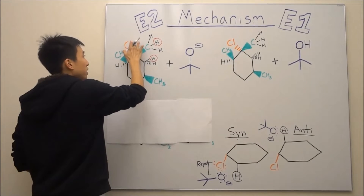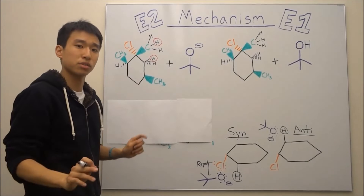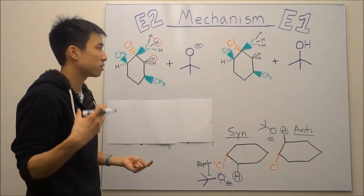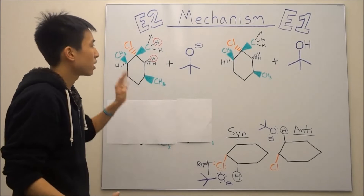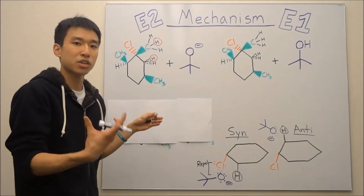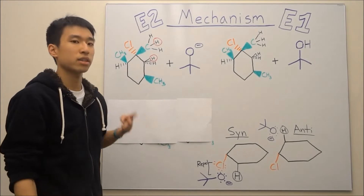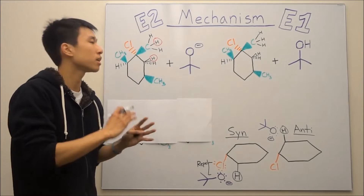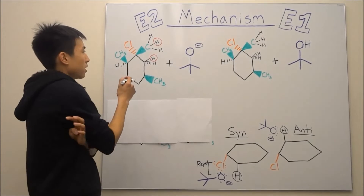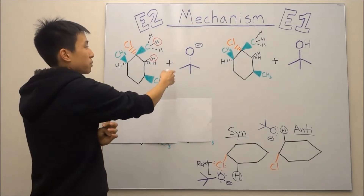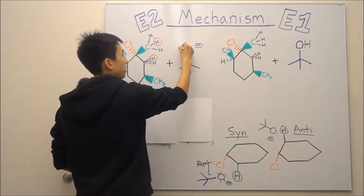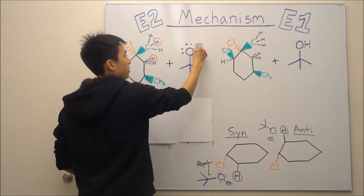Instead, just like in SN2, think about what happens first. Another way to figure out what happens first is to look at what's most reactive or unstable in your beaker. What's most natural is for the most reactive and unstable thing to react first and fix its own instability. So what's most unstable in our beaker is going to be tert-butoxide — our strong, strong base. It has valence electrons that make it very, very reactive.